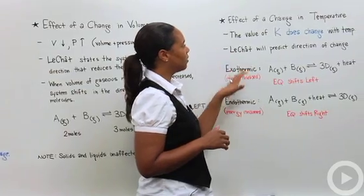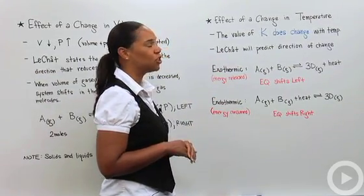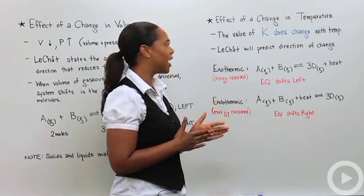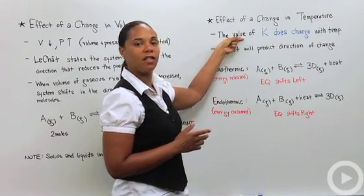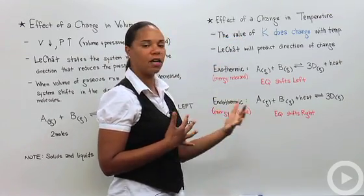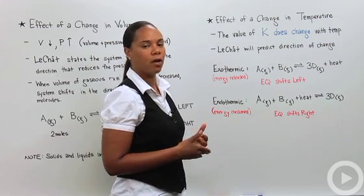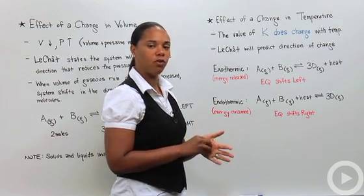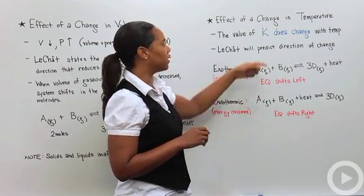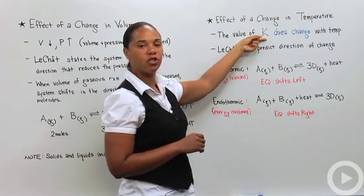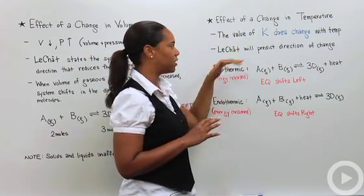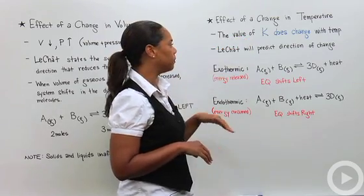So the last stressor that we want to talk about is the effect of a change in temperature. So the most important thing to note here is that the value of K, the equilibrium constant, does in fact change with temperature. In a problem, usually when you're given a set of conditions to solve an equilibrium problem, when they define K for you, they will tell you at what temperature that K actually holds true. So this is a point where people always get tripped up. K changes with temperature. But this is the only stressor for which K is changed.